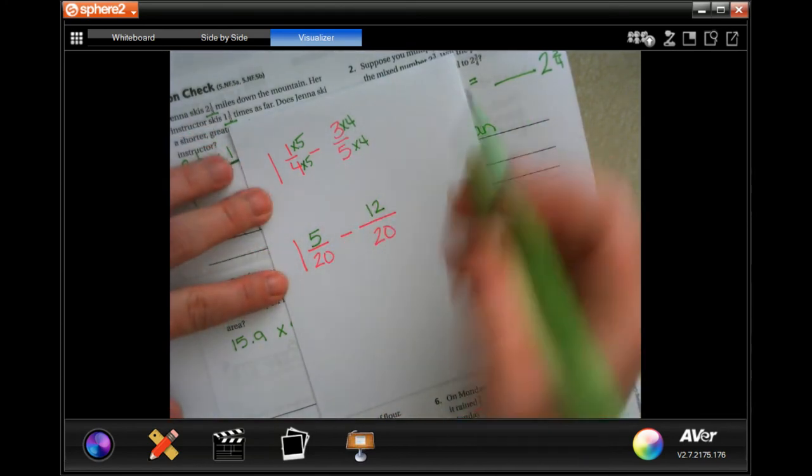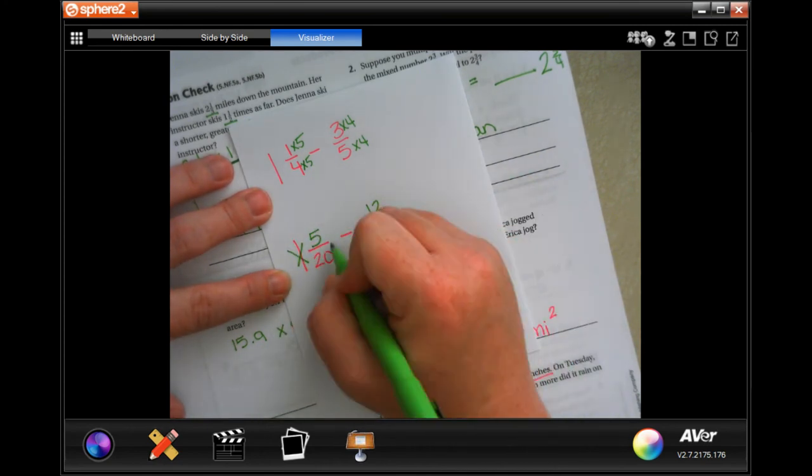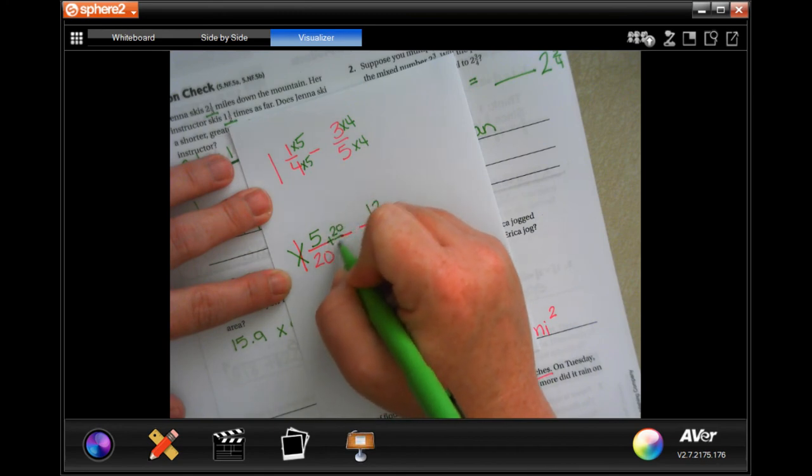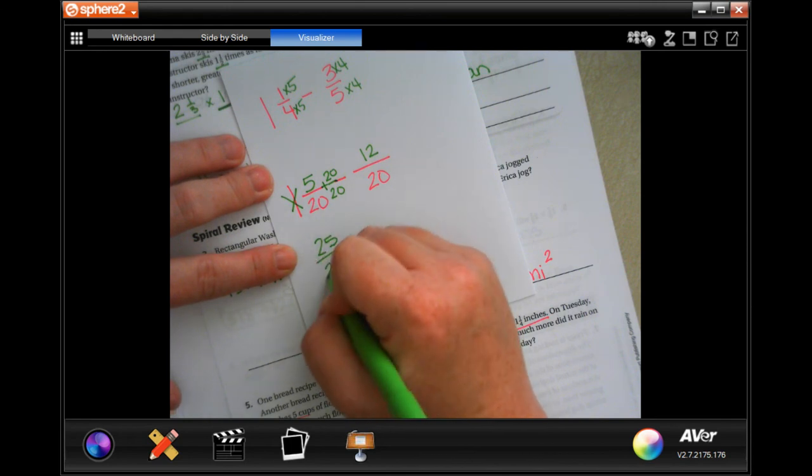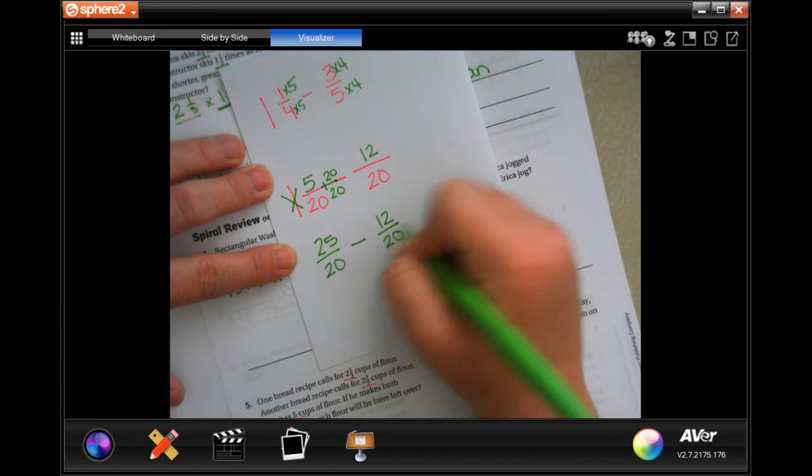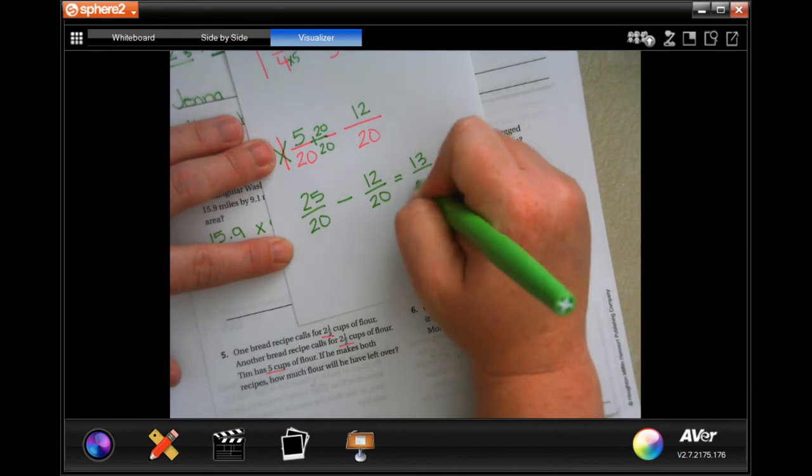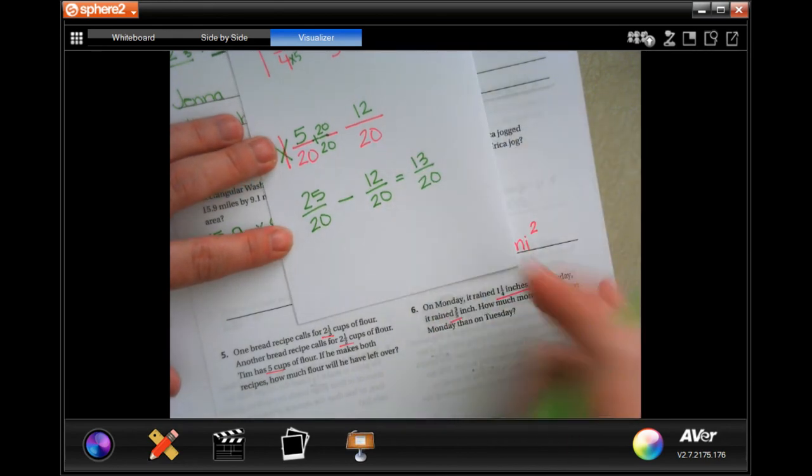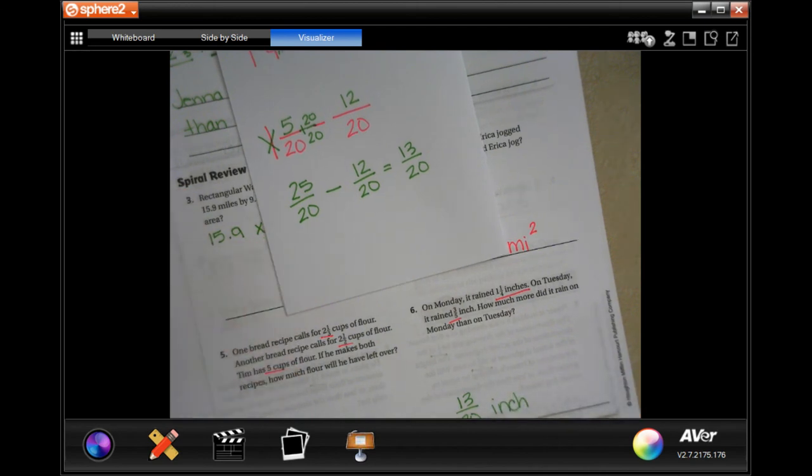Now, you will notice that five cannot take away 12. So, what I'm going to do is I'm going to do this, I'm going to borrow that one, I'm going to add a 20 over 20 here. So, then I'm going to have 25 over 20 minus 12 over 20. And I will have 13 over 20. 13 over 20 inch.